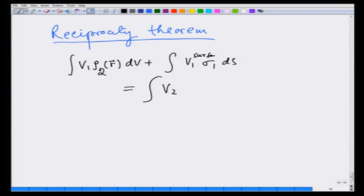same as integration v 2 rho 1 d v plus v 2 surface sigma 1 d s. So it relates the charge distribution and potential in one situation to the other.